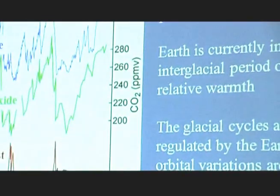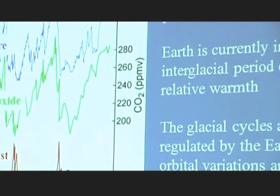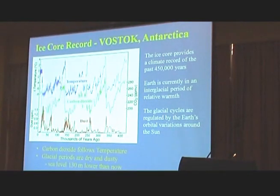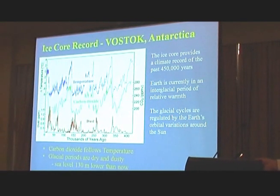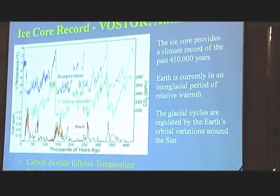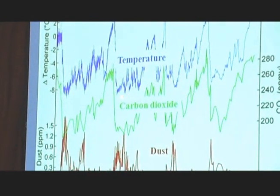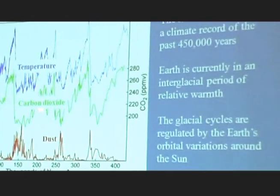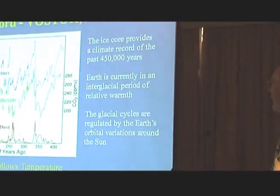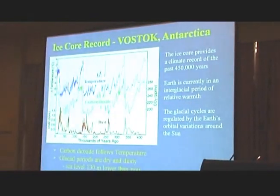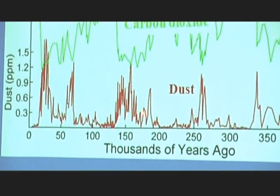This diagram goes back 400,000 years — it's the ice core from Vostok in Antarctica. The top two lines, the temperature and the carbon dioxide, are very familiar. If you've seen Al Gore's movie, he'll tell you that carbon dioxide is in lockstep with the temperature and they must be connected. In fact, carbon dioxide follows the temperature by about 1,000 years. But the point I really want to emphasise today is this lower record of the dust in the Antarctic core.